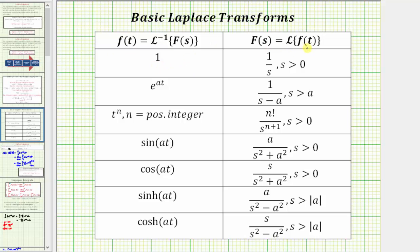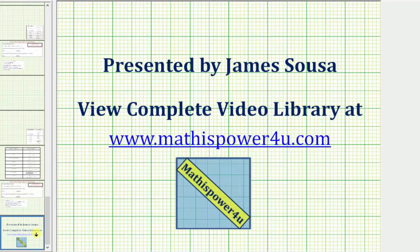Looking at the first row, if f of t equals one, the Laplace transform is big F of s equals one divided by s. Notice that because we had f of t equals three, multiplying one over s by three gives the Laplace transform of the constant function f of t equals three. For each example, after using the limit definition to find the Laplace transform, we'll also look for the corresponding formula in the Laplace transform table. I hope you found this helpful.